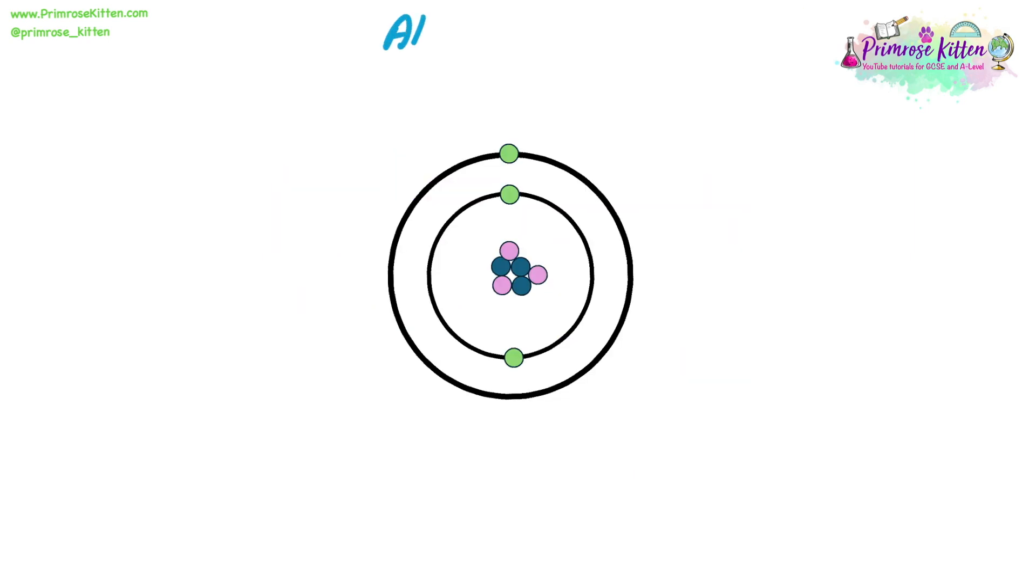So finally, let's go over some key takeaways about atomic structure that we need to know ahead of any GCSE chemistry exam. Atoms have a neutral charge overall. This is because the positive protons and the negative electrons on the shells counteract each other. They balance out the charge, giving a neutral charge overall.